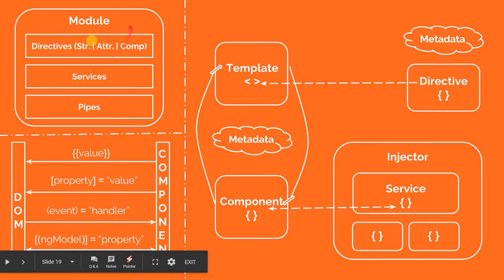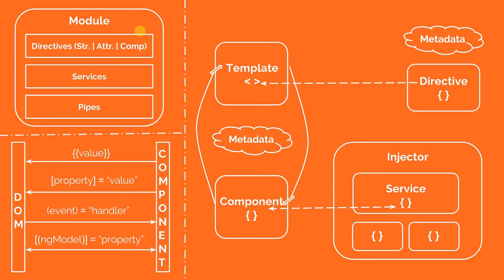Every Angular application consists of several building blocks: modules, components, and directives. Directives can be further subdivided into three types — structural directives, attribute directives, and component directives. Then we have services, pipes, model classes, interfaces, guards, and other things of that sort.